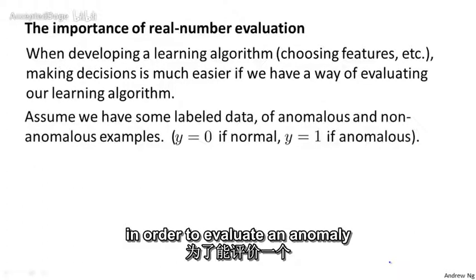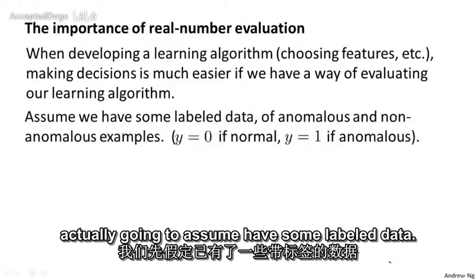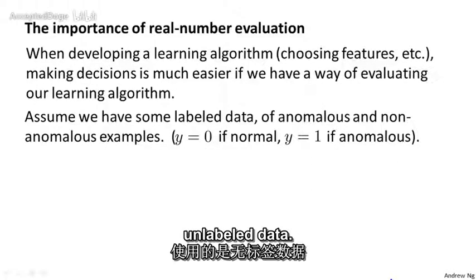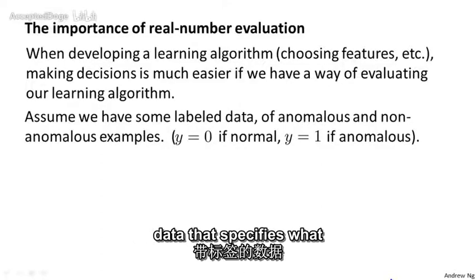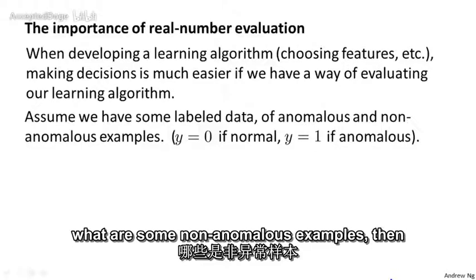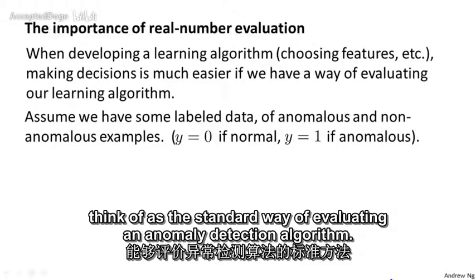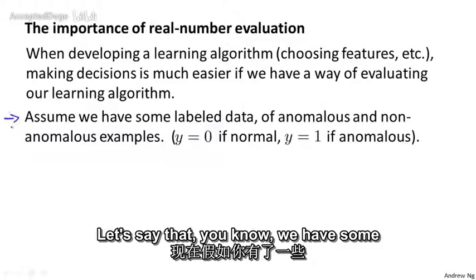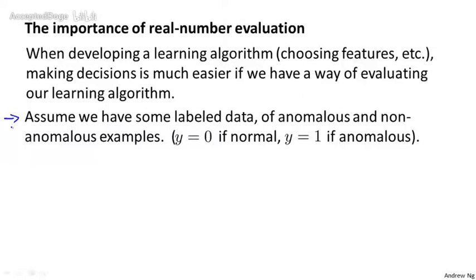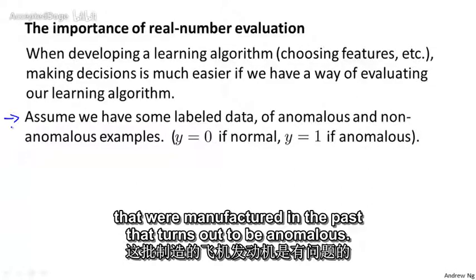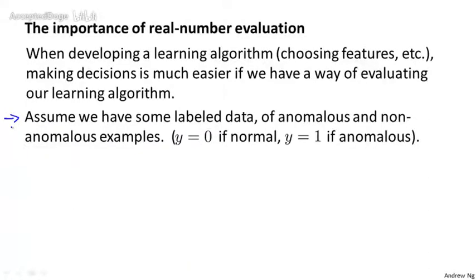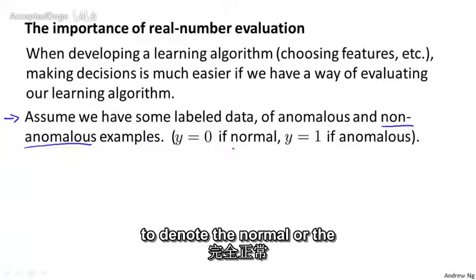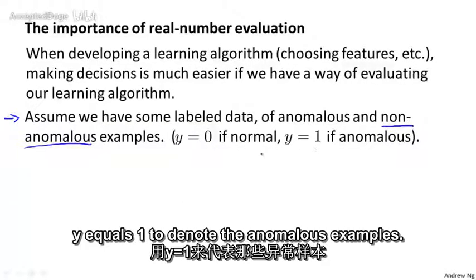In order to evaluate an anomaly detection system, we're actually going to assume that we have some labeled data. So far we've been treating anomaly detection as an unsupervised learning problem using unlabeled data. But if you have some labeled data that specifies what are some anomalous examples and what are some non-anomalous examples, this is the standard way of evaluating an anomaly detection algorithm. I'm going to use y=0 to denote normal or non-anomalous examples, and y=1 to denote the anomalous examples.